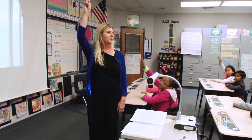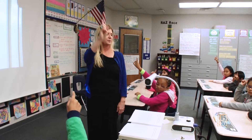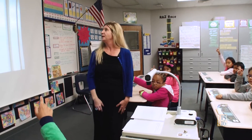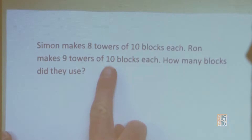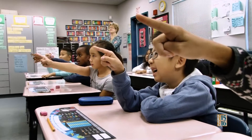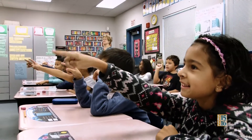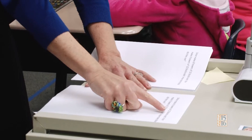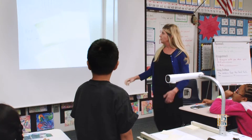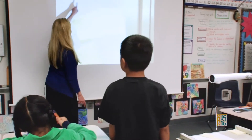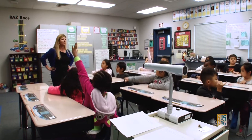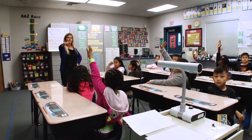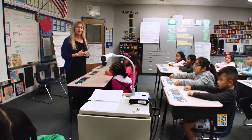Everyone put your reading finger up and place it on our paper. We're going to begin — one, two, three. In class today you'll see us reading the problem two ways. The first time we'll read chorally: 'Simon makes eight towers of ten blocks each.' Then I'll pose the question: can you tell me what our story or problem is about? But I don't want you to use any numbers, and I don't want you to solve the problem. Go ahead and turn and talk to your neighbor.